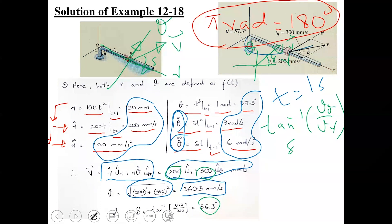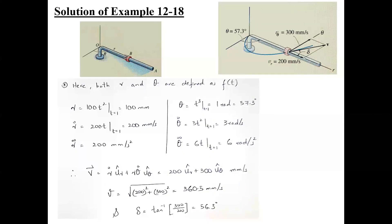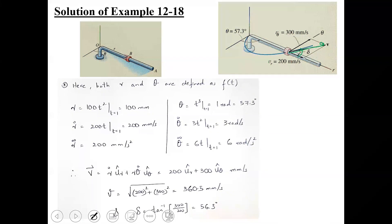The same figure shows the velocity vector in the first coordinate with its components Vr and V-theta both positive. The angle sigma of 56.3 degrees is measured from the positive r-axis. This is the velocity vector and its magnitude and direction are clear.